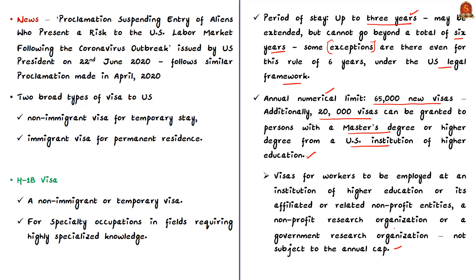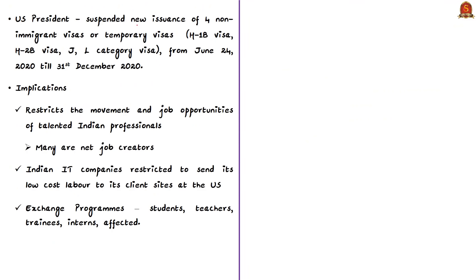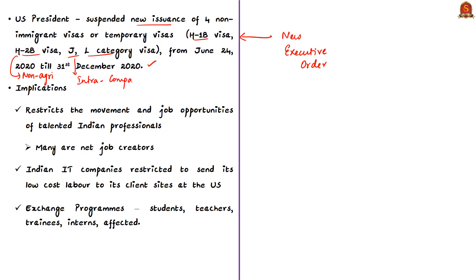The US president has suspended the new issuance of four non-immigrant visas from June 24th till December 31st, 2020. One of the suspended visas is the H-1B visa; others are the H-2B visa, J category visa, and L category visa. H-2B refers to visas for temporary non-agricultural workers. The L category visa is for intra-company transferees, meaning a company cannot transfer a foreigner to its branch or parent company in the USA. J category visas are for exchange visitor programs, including teachers, students, interns, and trainees.